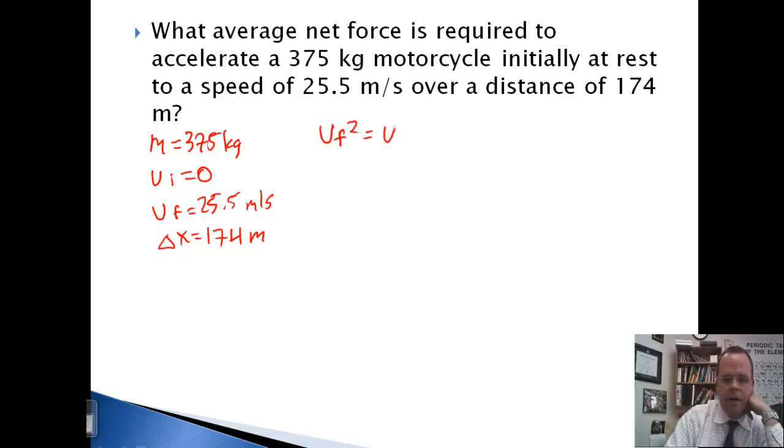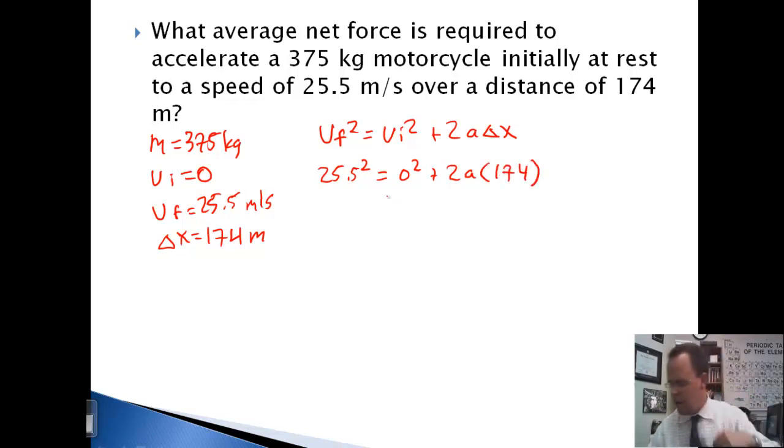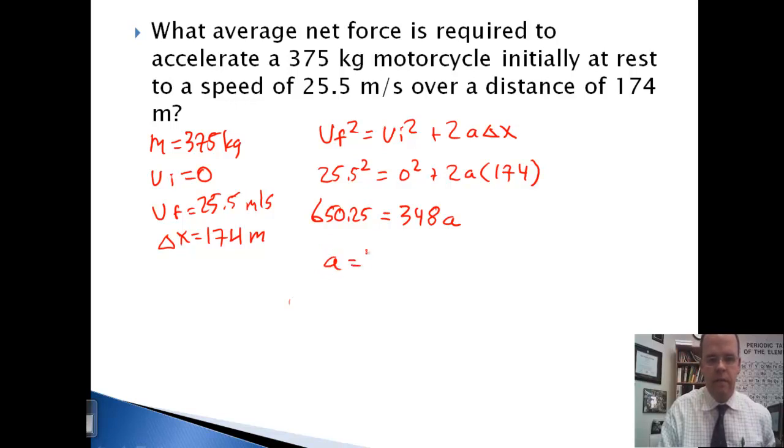In this case, the easiest thing to use would be VF squared equals VI squared plus 2A delta x. 25.5 squared equals 0 squared plus 2 times A times 174. So I get 650.25 equals 348A. You get 1.87 meters per second squared.